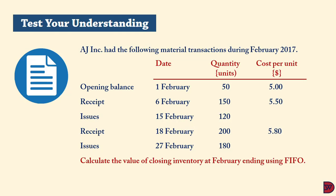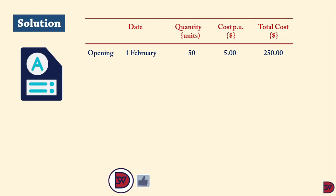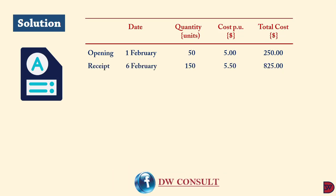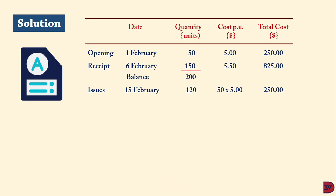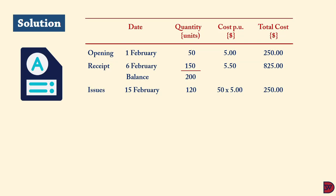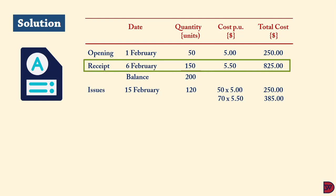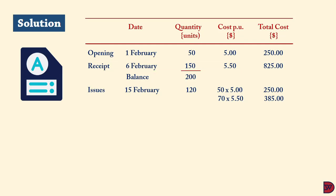We calculate the closing inventory at February end using FIFO. Opening: 50 units × $5.00 = $250. Receipt on 6 February: 150 units × $5.50 = $825; balance = 200 units. Issue on 15 February of 120 units: first, exhaust the opening 50 units at $5.00 = $250, then issue 70 units from the 6 February receipt at $5.50 = $385. Balance remaining: 80 units at $5.50 = $440.